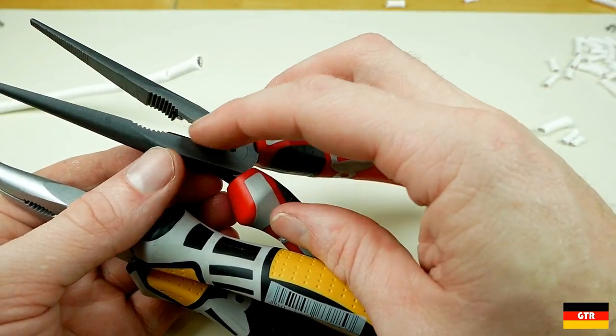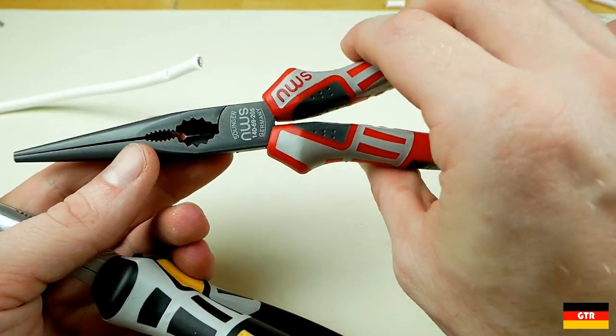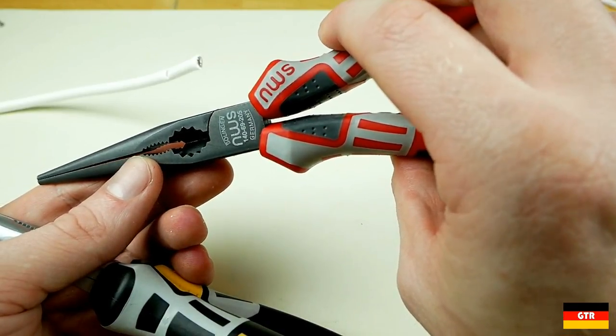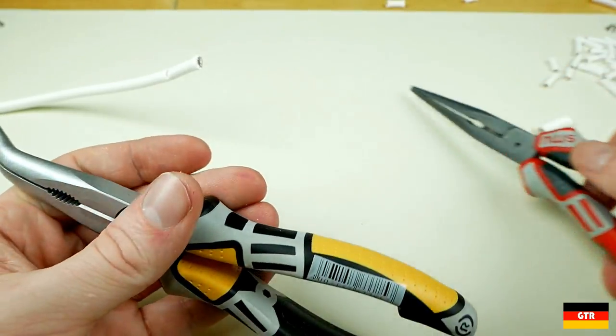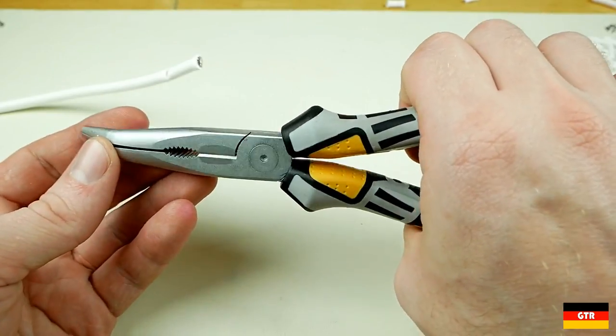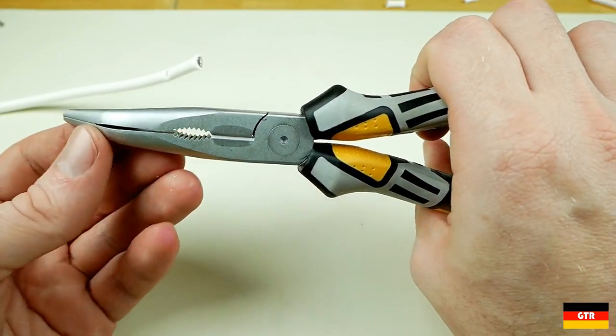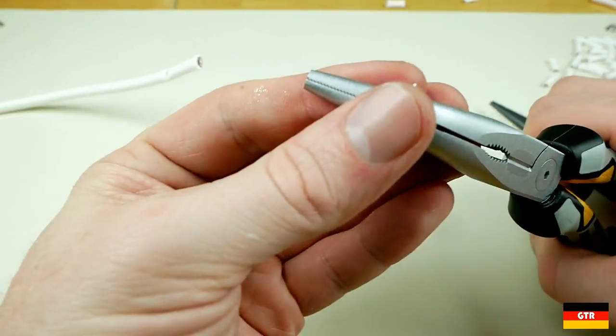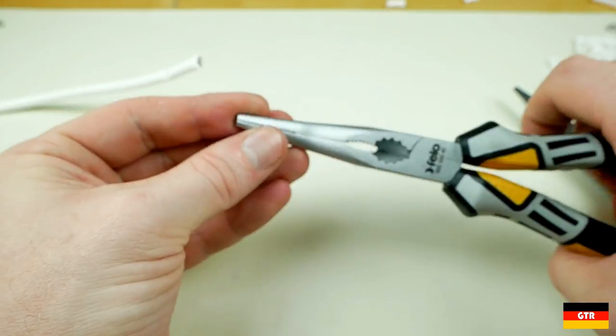So it really depends on your intended application for the pliers as to which finish would be most appropriate for you. If you're consistently having issues with pliers rusting, then you may want to consider looking at the chrome plated version for that particular pair of pliers. If you don't have any corrosion issues and you want that maximum edge sharpness right out of the box, then the black or polished finish would be more appropriate as long as you take the time to oil the pliers periodically.